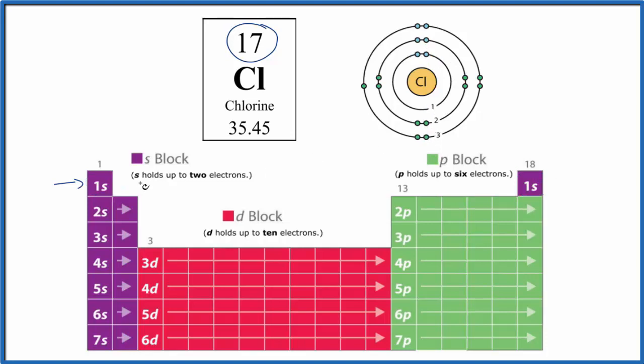Next, we need to go to the second energy level, second period here on the periodic table. 1, 2, 3, 4, 5, 6, 7, 8. So we can put 8 in that second energy level there. So there's 8. So far we have 8 plus the 2, 10 electrons.